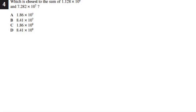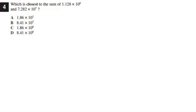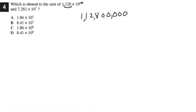Number 4: which is closest to the sum of 1.128 times 10 to the 8th and 7.282 times 10 to the 7th? We need to convert both to standard form, add them, then convert back to scientific notation. For 1.128 times 10 to the 8th, we move the decimal 8 places to get 112,800,000. For 7.282 times 10 to the 7th, we move the decimal 7 places to get 72,820,000.